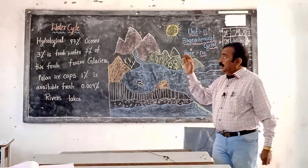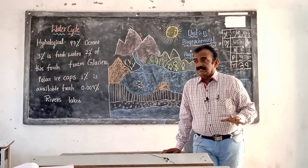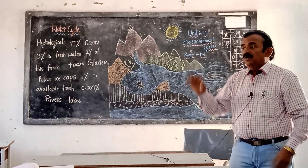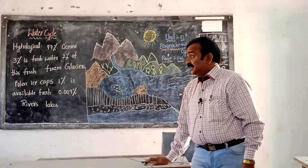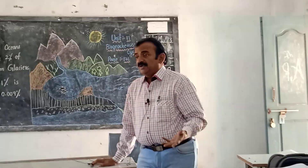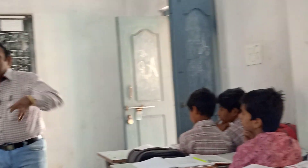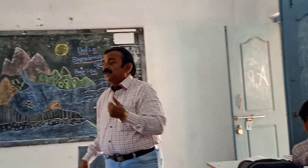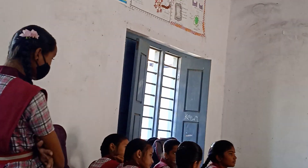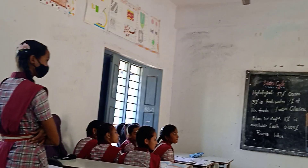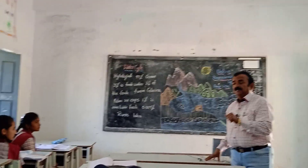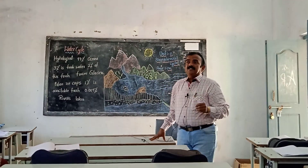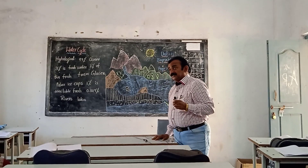The total amount of water on Earth is 100 percent. Out of 100 percent, 97 percent of water is present in oceans - the Pacific Ocean, Indian Ocean, Arabian Sea, Atlantic, Arctic - many oceans. In the ocean, salt water is present - marine or salt water. Only 3 percent of water is fresh water. Out of that, 2 percent is present in the north and south poles in the form of glaciers and ice.